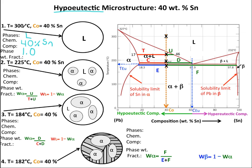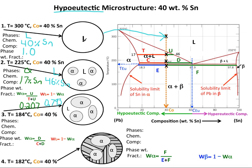We are now going to talk about hypo-eutectic microstructures. We are given a temperature of 300°C and 40% tin, putting us in the liquid region. The phase present is liquid, the chemical composition is 40% tin, and the phase weight fraction is 1.0. It looks no different from any other liquid we've drawn.